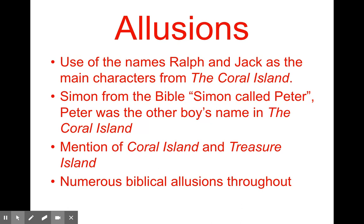There are lots of allusions — references to things in history or in literature. There's a reference to Coral Island, which is that book I was talking about. There are allusions to the Bible, several of them. This is written in the early 20th century when biblical allusions would have been expected from a good writer. You have Simon called Peter in the Bible, and we have a character named Simon who has a lot of very righteous things about him. There's also a boy named Peter in Coral Island, so there's an allusion to that. They even mention Coral Island and Treasure Island, and there are other numerous biblical allusions throughout — things like snakes, garden-like settings, etc.